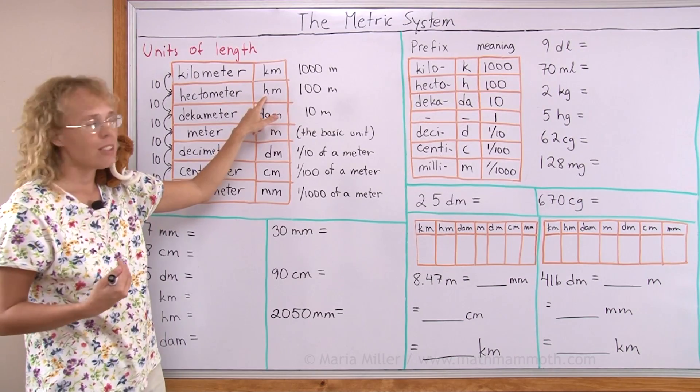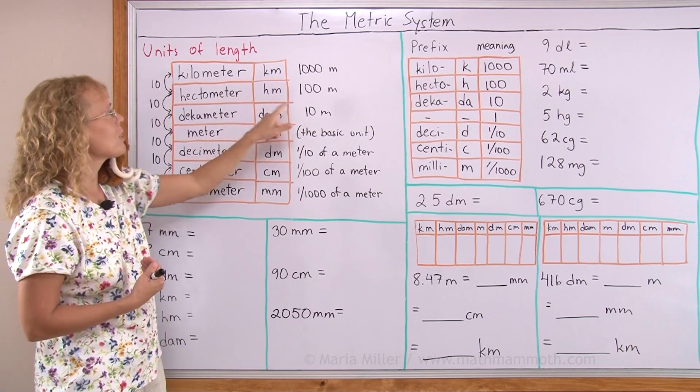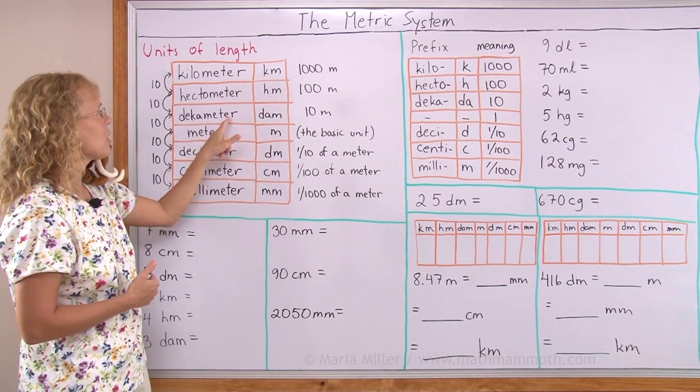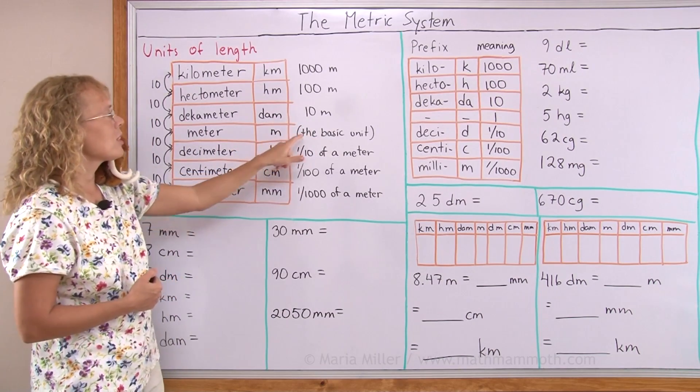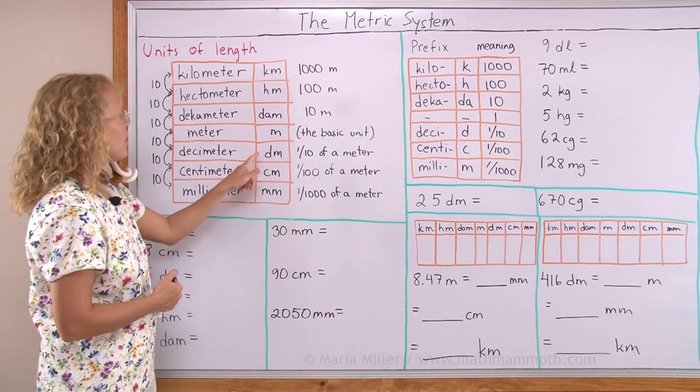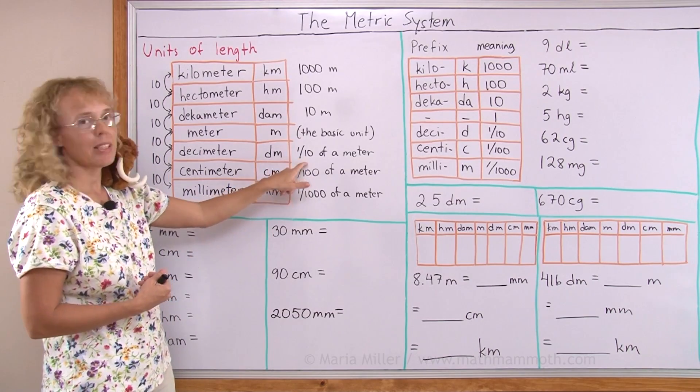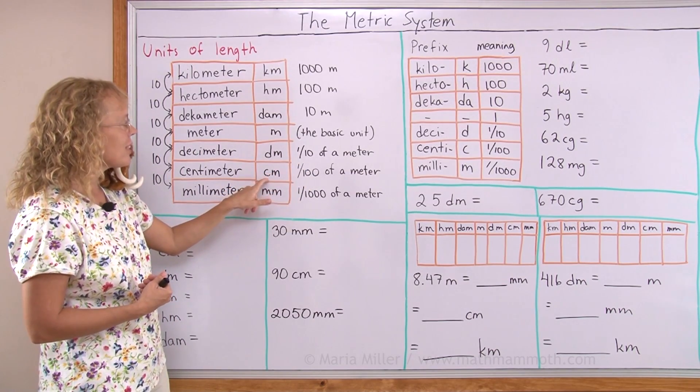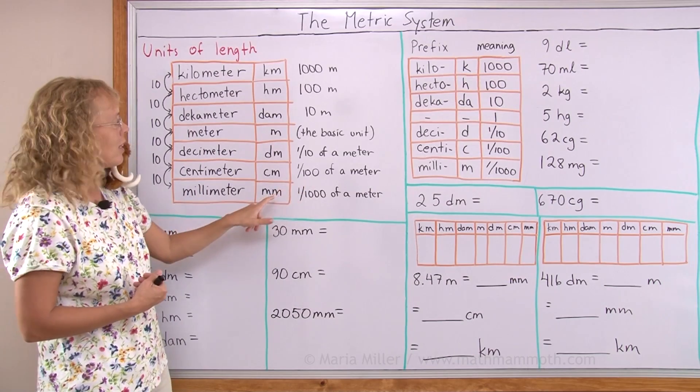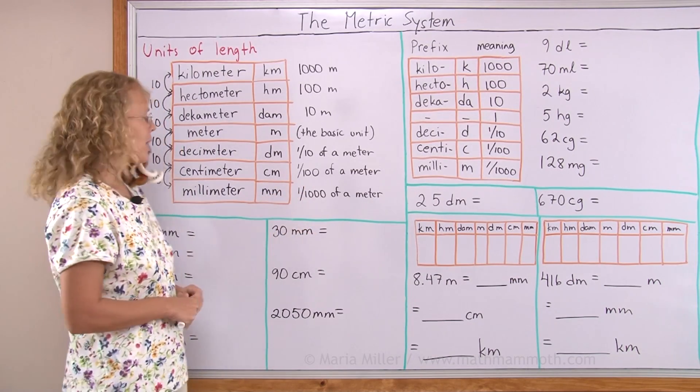Decameter is ten meters, meter is the basic unit for length, then decimeter is one-tenth of a meter, deci here meaning one-tenth, centimeter, cent meaning one-hundredth, and then milli here meaning one-thousandth.